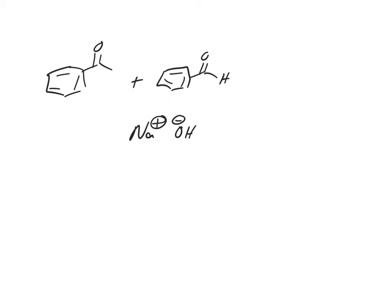The key to the chalcone synthesis is going to be an aldol reaction, and perhaps an aldol condensation if we push it, is that we only have one set of enolizable hydrogens.